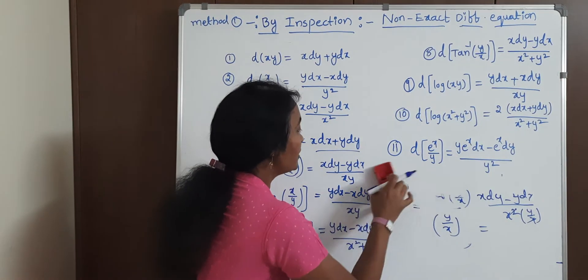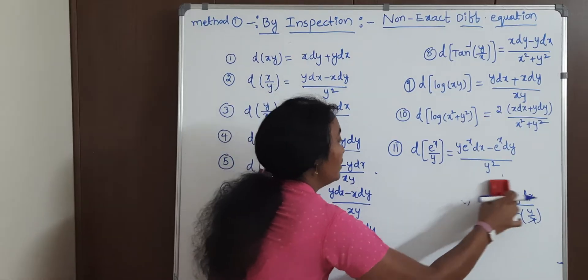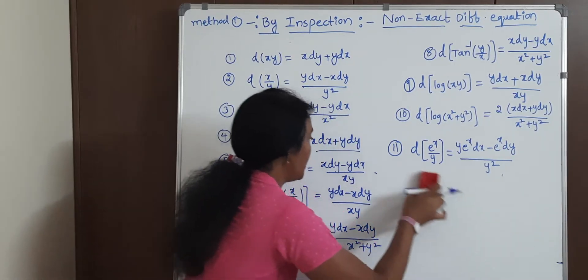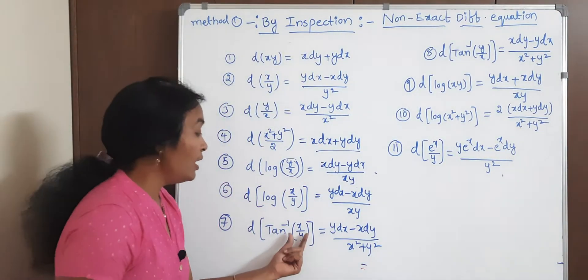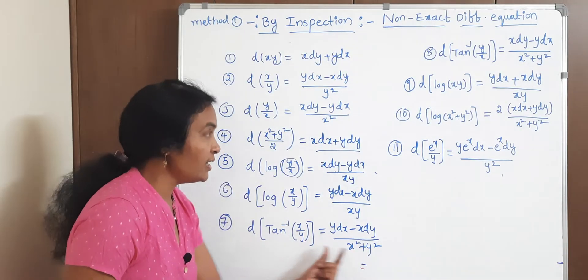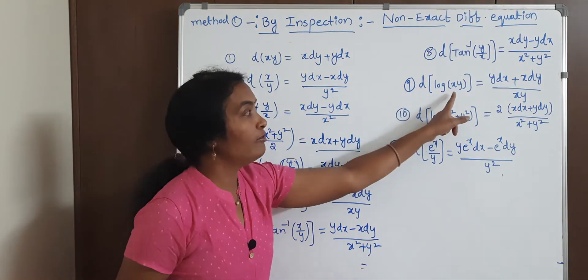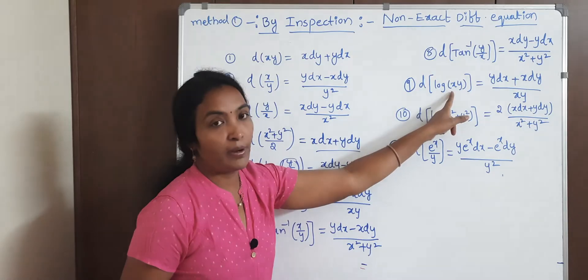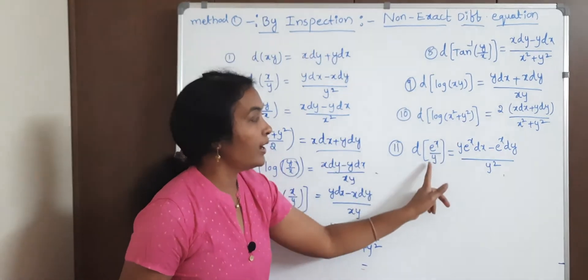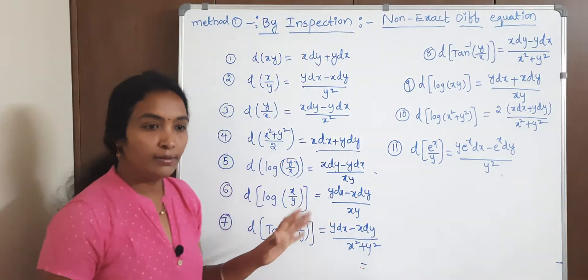Now tan inverse: d(tan⁻¹(x/y)) — using the tan inverse principle, 1/(1+x²), substitute accordingly and you'll get the result. Similarly for log(xy) and e^(xy), apply the same respective principles.